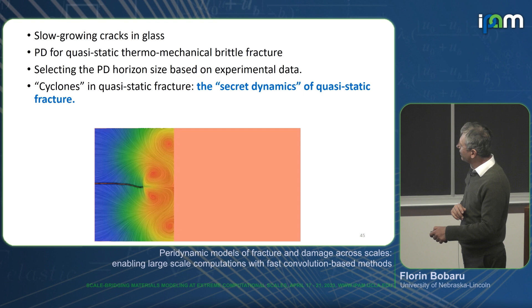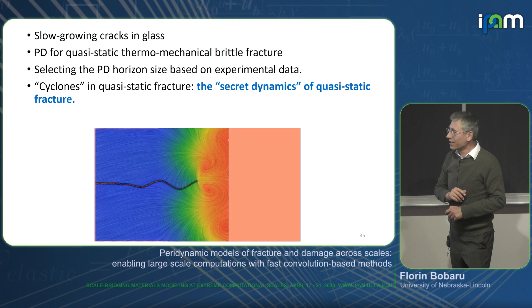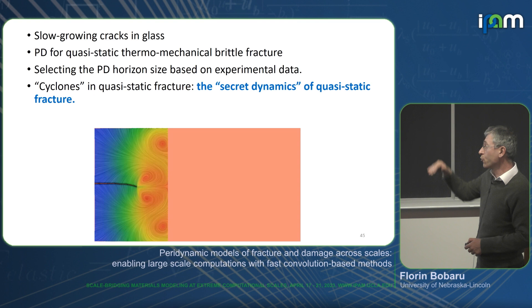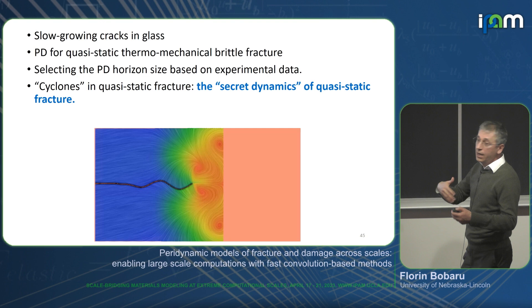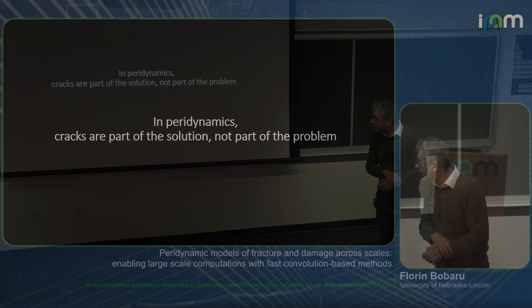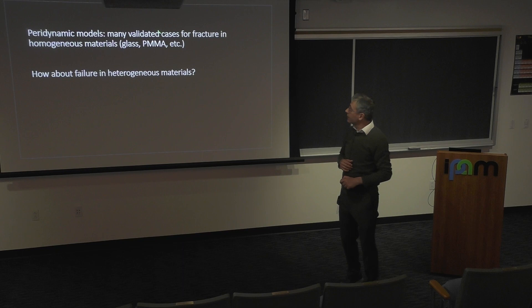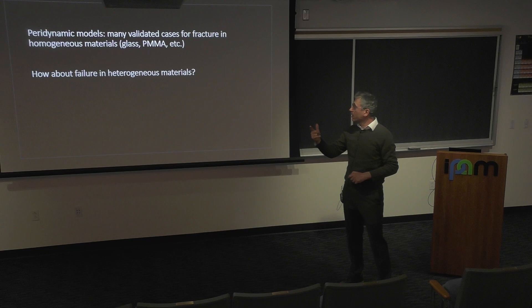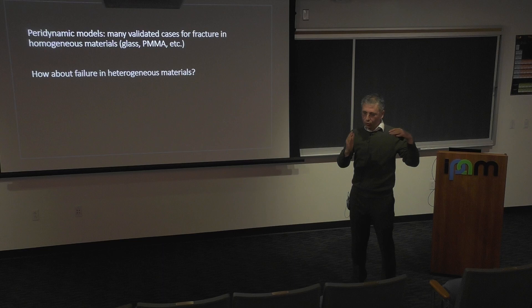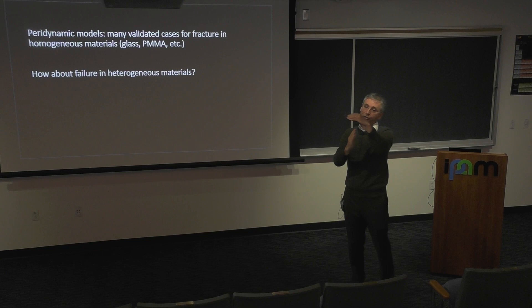In peridynamics, cracks are part of the solution, not part of the problem — which for many decades was the challenge. We've done extensive validated work on fracture in homogeneous and isotropic materials like glass and PMMA. We have a paper where with two PMMA layers, depending on how you dynamically load an advancing crack, it can run along the interface and punch through the second layer. But how about heterogeneous materials?